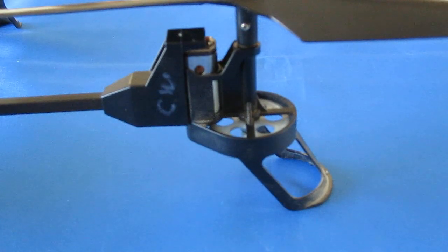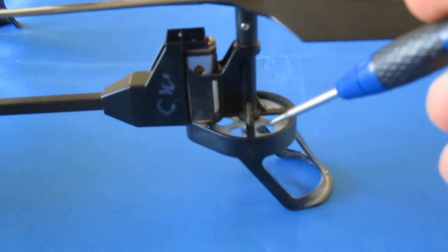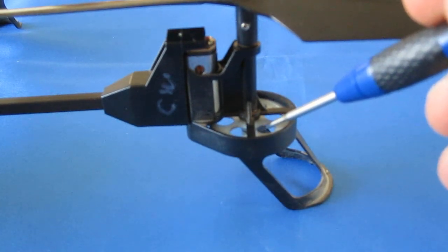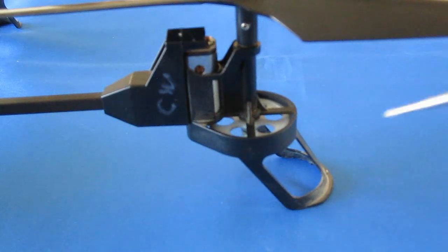Next to the motors, the second most common thing that fails on the V262 through normal wear and tear, not from crashes, but from normal wear and tear, are these gears, the gearing mechanism on the quadcopter. I've had some requests to show how to change these, and that's the objective of today's video.